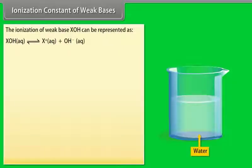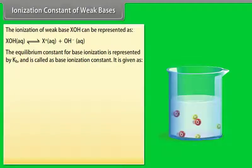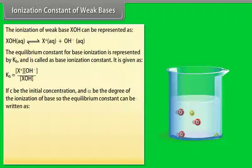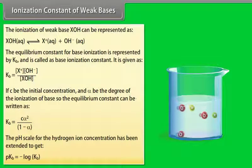The ionization of a weak base XOH can be represented as an equilibrium. The base ionization constant KB is: if C is the initial concentration and alpha is the degree of ionization, then KB = Cα² / (1−α).